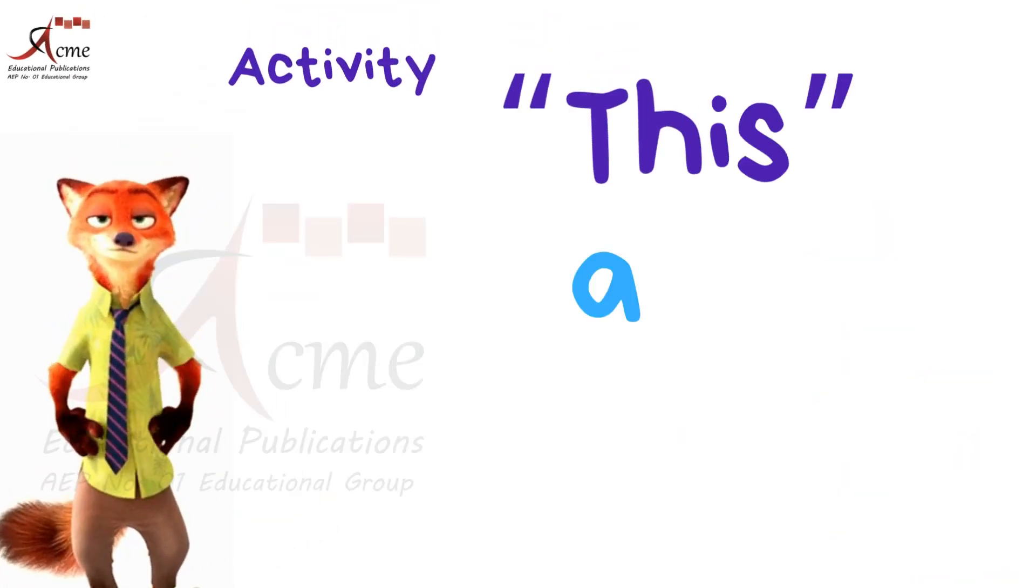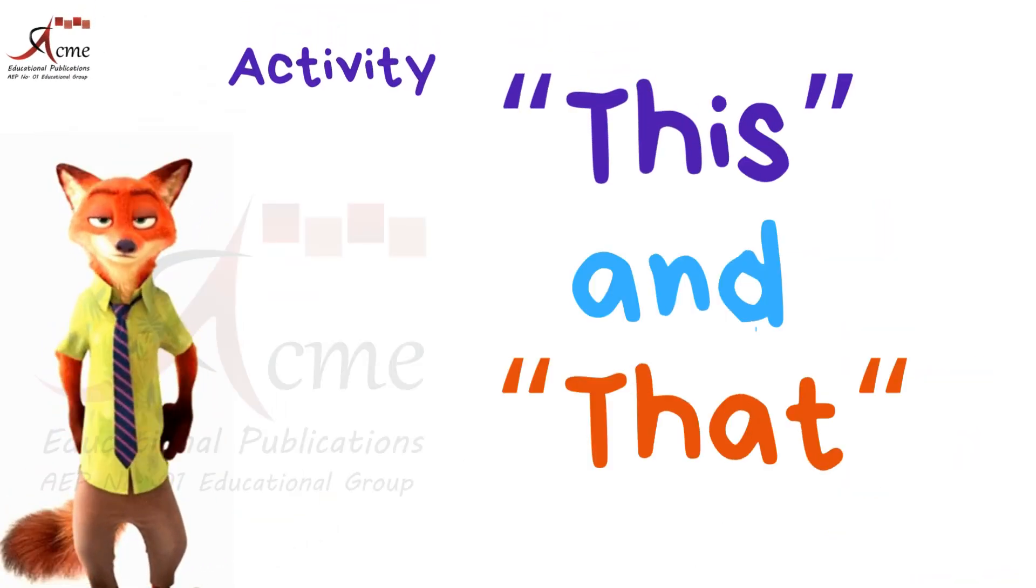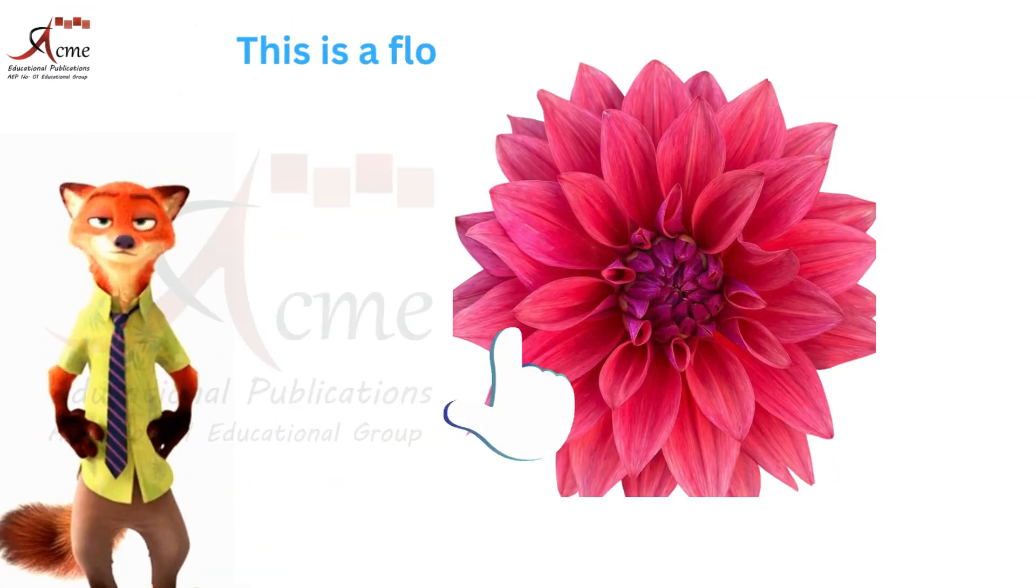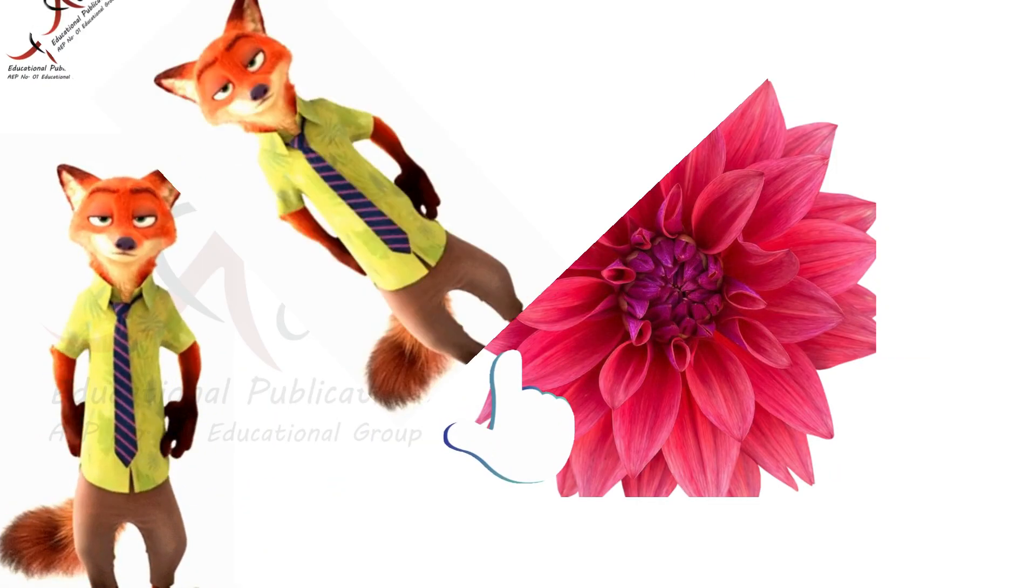We have two words, this and that. This is used when we talk about something close to us, like when we say, this is a flower or this is a book.